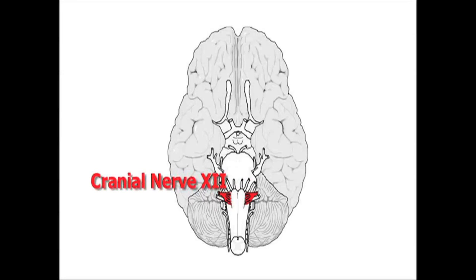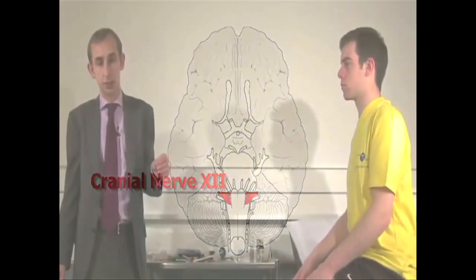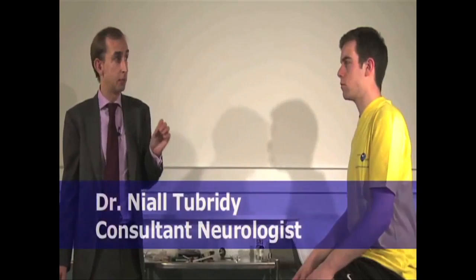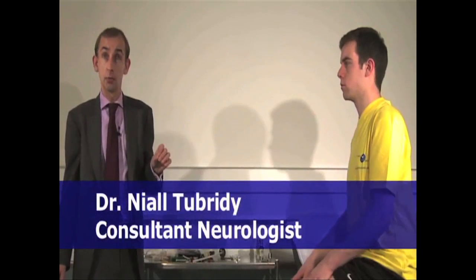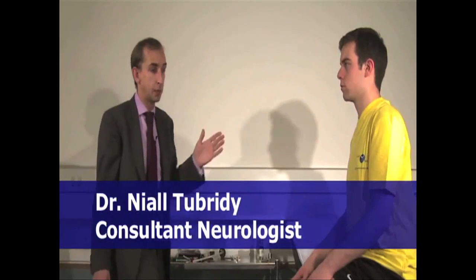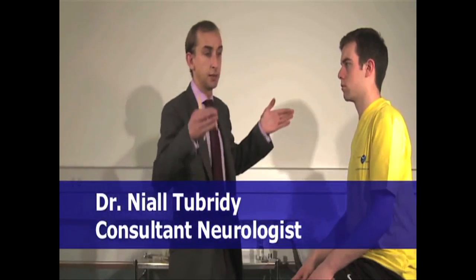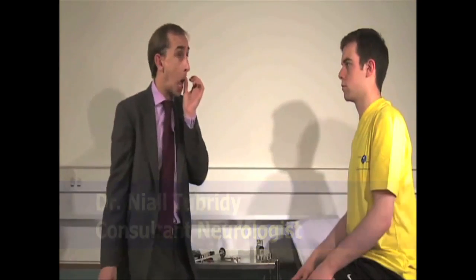The 12th cranial nerve is the hypoglossal nerve. Its nucleus, as stated in earlier parts of this demonstration, is in the medulla or bulb of the brain stem. It is the nerve supply to the tongue.